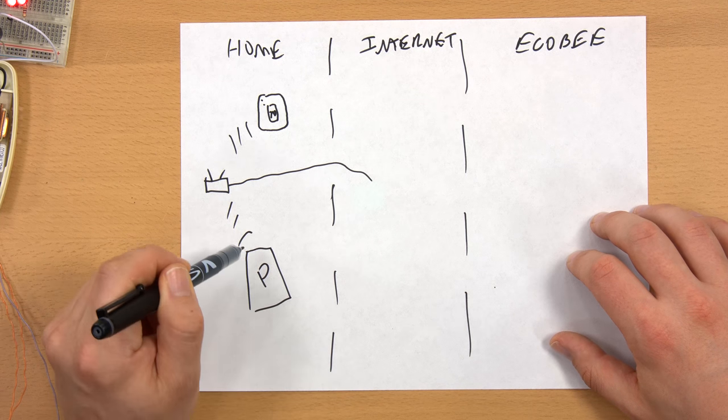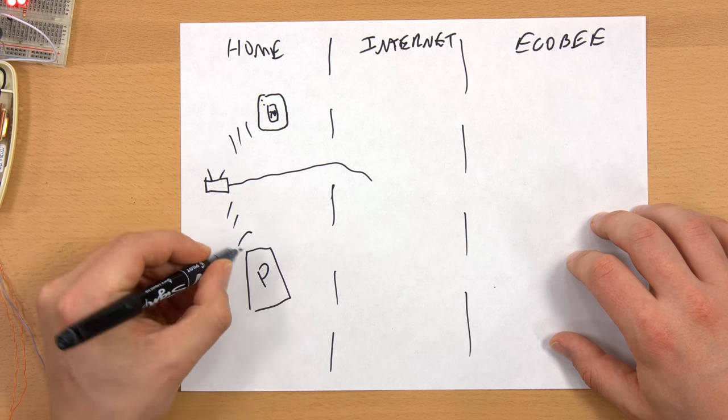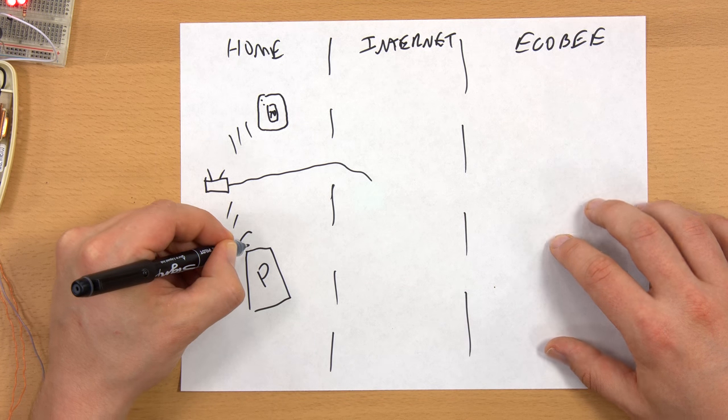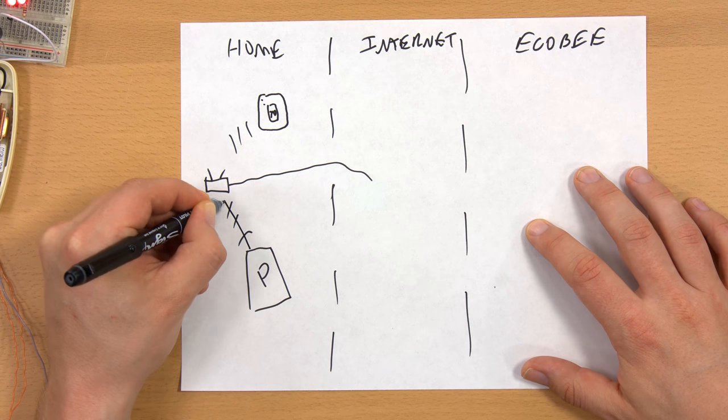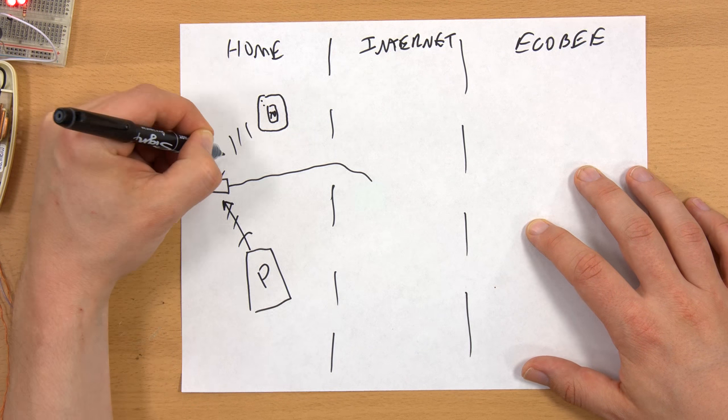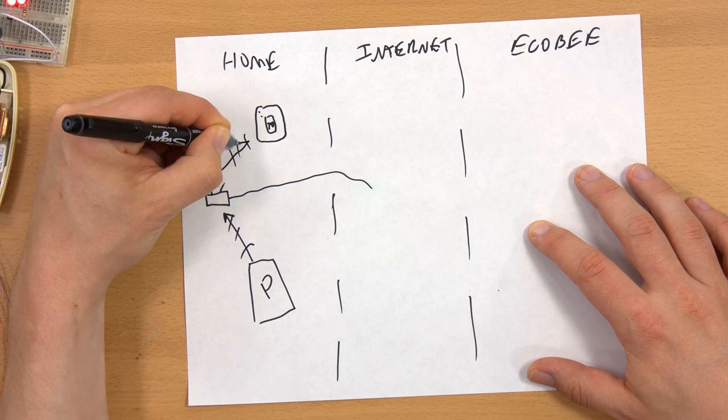You would think logically that the data would just go—when I send a command, it would go from my phone to my access point, my router, and then to the Ecobee. But that is not what it does at all.